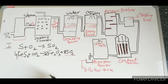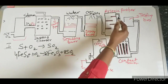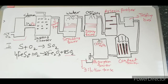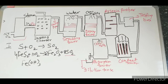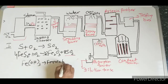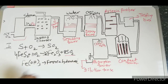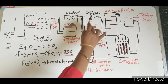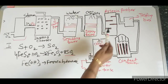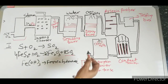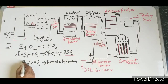The arsenic purifier is very important. It is a chamber with steps containing Fe(OH)3 — ferric hydroxide. When sulfur dioxide passes through, any arsenic oxides present are absorbed by the ferric hydroxide.